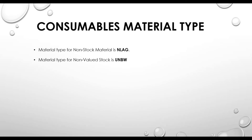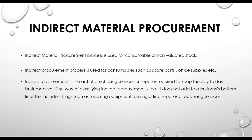The example of consumable material types in SAP: the material type for non-stock material is NLAG, and the material type for non-valuated stock is UNBW. These are the default material types for consumable items in SAP. In summary, the indirect material process is used for consumable or non-valuated stock.